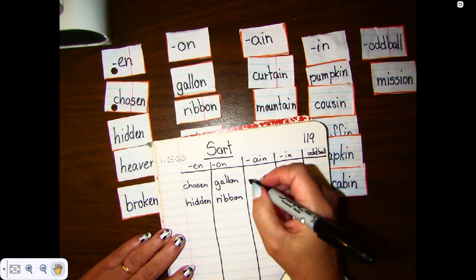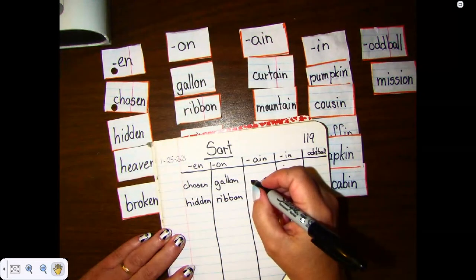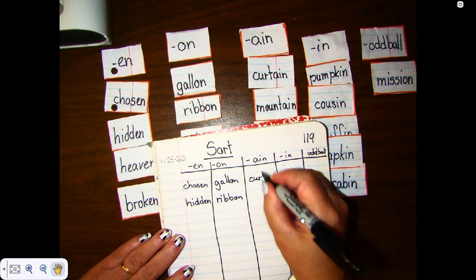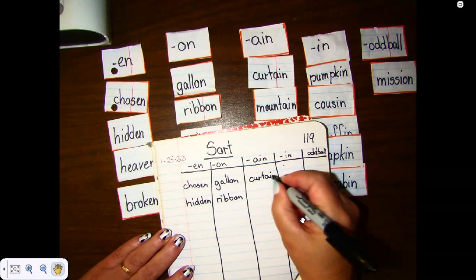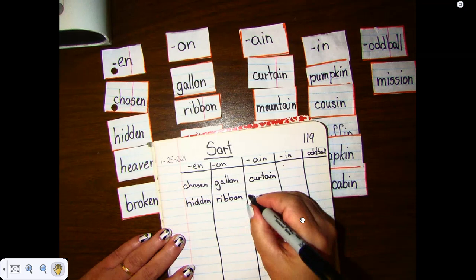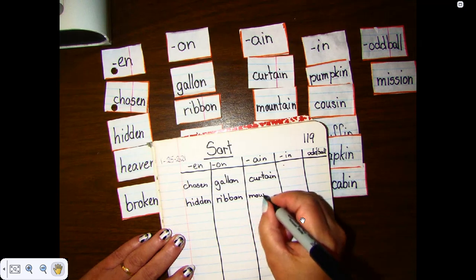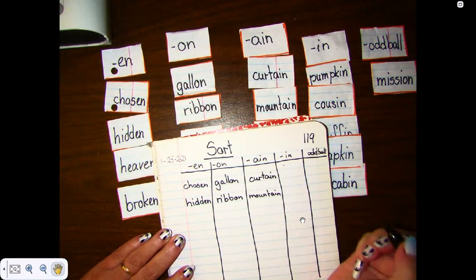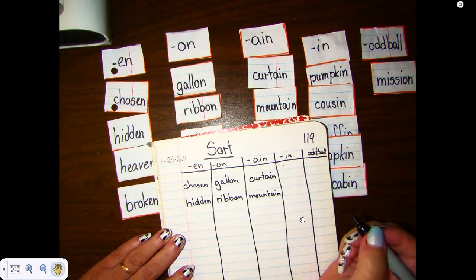Then I'm going to move on to my A-I-N column. And I have curtain. Yep. A-I-N. And then I have mountain. All right. Pause the video here and write the other three words down.